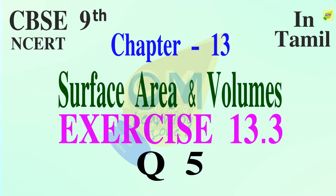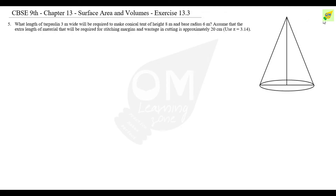Exercise 13.3, Question 5. What length of tarpaulin 3 meters wide will be required to make a conical tent of height 8 meters and base radius 6 meters? Assume that the extra length of material required for stitching margin and wastage in cutting is approximately 20 centimeters.